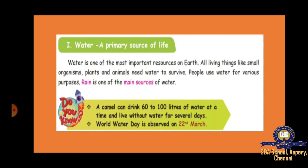What is the main source of water? Mainly, we get water from rain. Rain is one of the main sources of water. If it is not raining, we will never get water. All the bore wells and wells will get dried up and we will not get water. In summer season, we face this problem. So, rain is the main source of water.